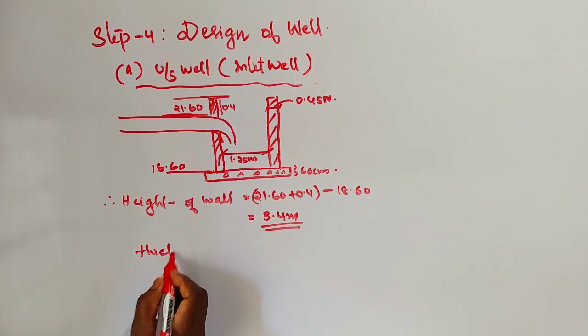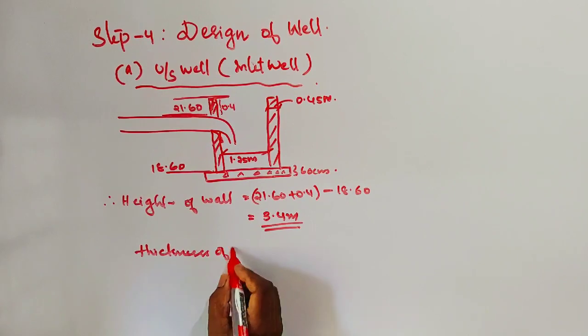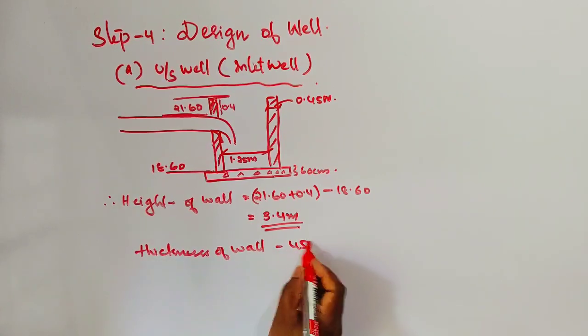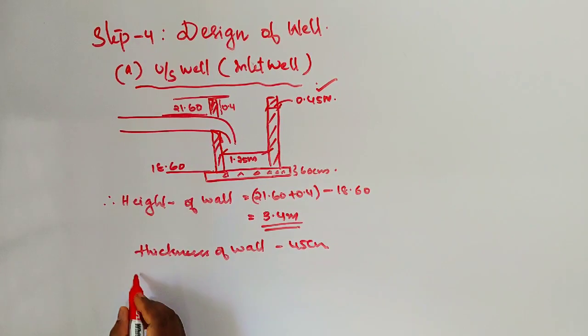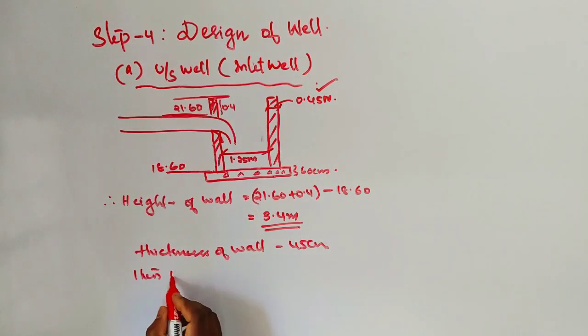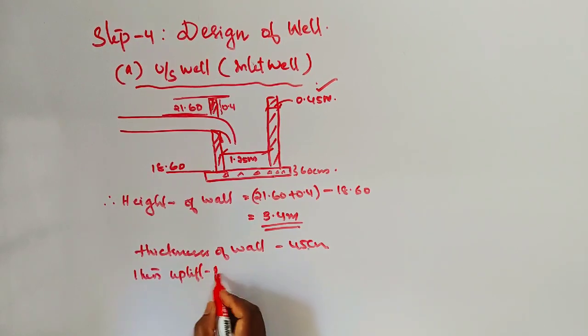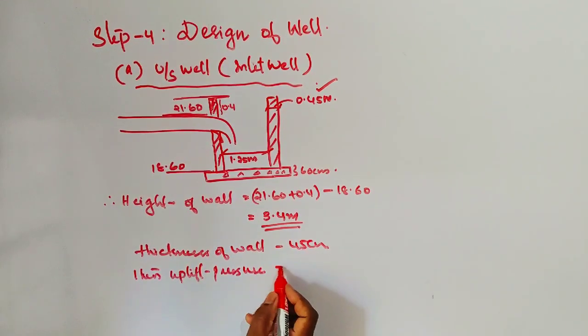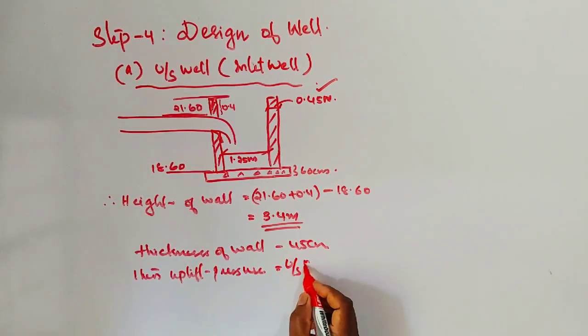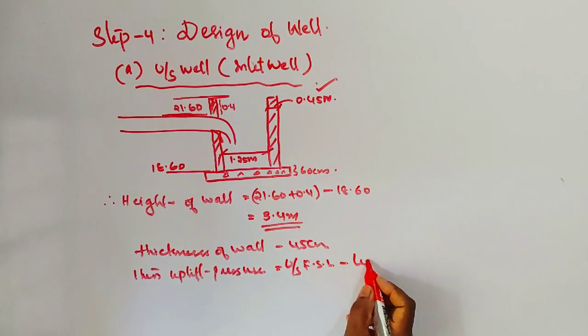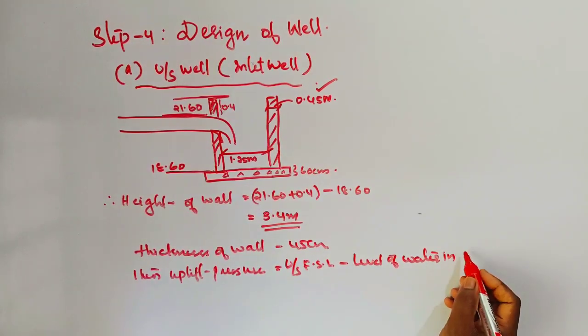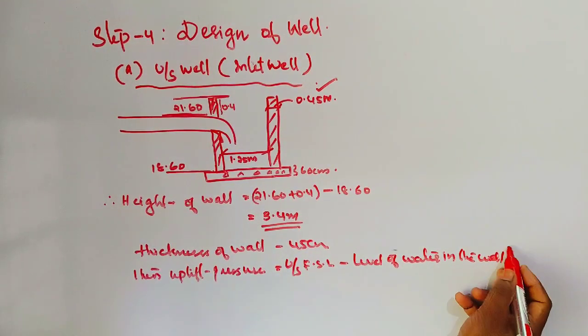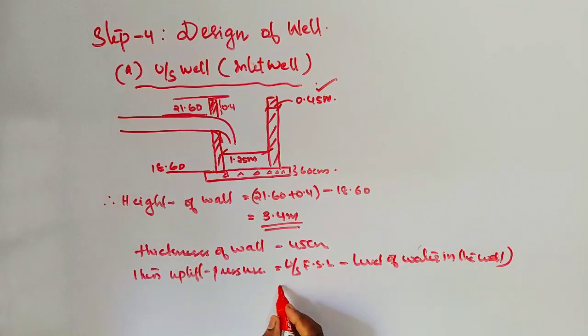Thickness provided for the wall is 45 centimeters, that is 0.45 meters. When the canal is full running, consider uplift pressure head. Uplift pressure head equals upstream full supply level minus the level of water in the inlet well.